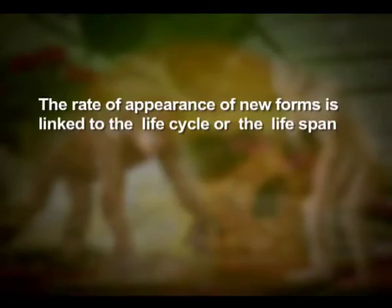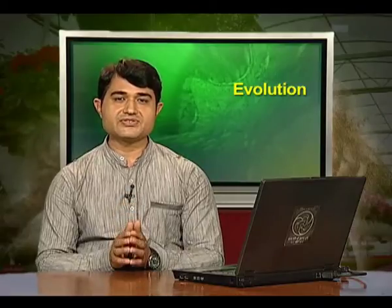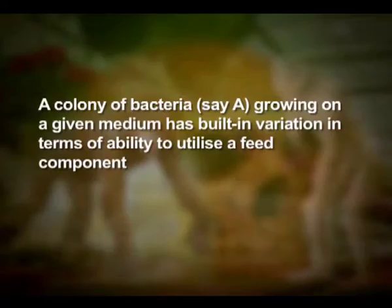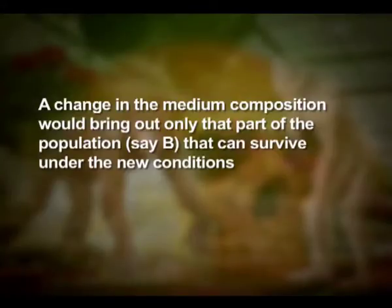The rate of appearance of new forms is linked to the life cycle or life span. Microbes that divide fast have the ability to multiply and become millions of individuals within hours. A colony of bacteria growing on a medium will have variation in terms of ability to utilize a feed component. A change in the medium composition would bring out only that part of the population — say population B — that can survive under the new conditions. In due course of time, this variant population outgrows in numbers and appears as a new species.